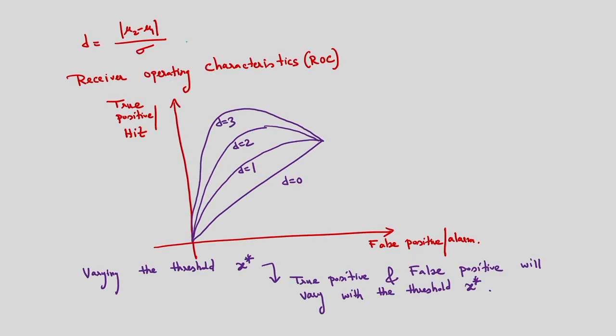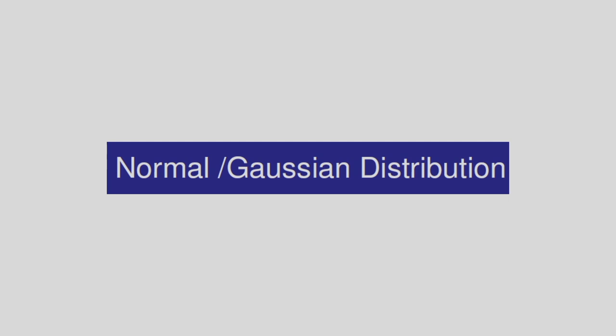Based on the discriminability ratio, I am plotting the ROC curve (receiver operating characteristics). This concept was already explained in previous classes, but here I am using Bayes decision theory to explain how to determine the performance of a classifier. After this, I will discuss the concept of Bayesian decision surfaces — what is the decision surface between two or more classes — but first let me explain the normal and Gaussian distribution.